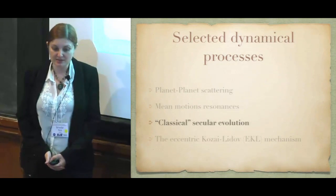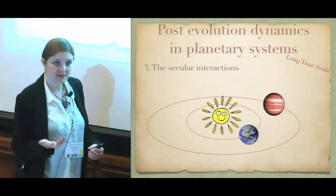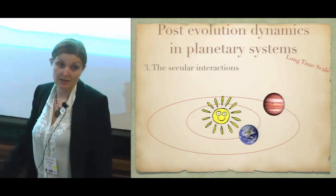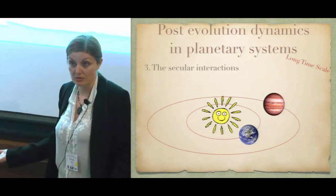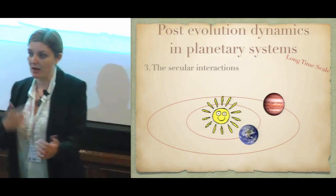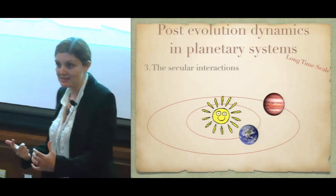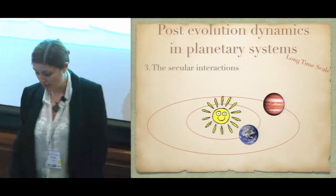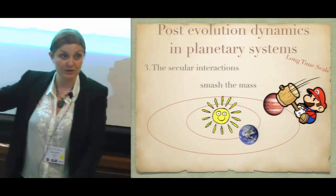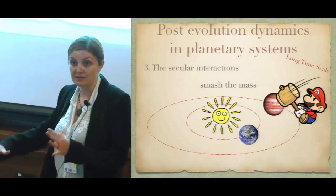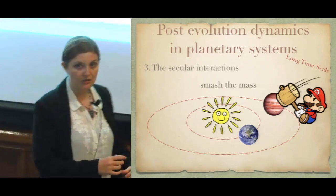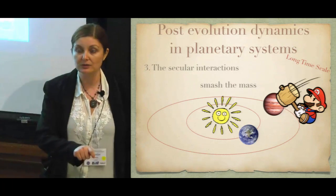Now let's look at what I call classical secular evolution. Considering two planets that are rather circular and coplanar — exactly like our own solar system — on orbital timescales nothing interesting happens. The system is stable, so we can average over the orbit. Averaging over the orbit means we smear the mass around and treat the orbits as two wires interacting with each other. This is called the secular approximation — averaging over the orbit and looking at long timescales.